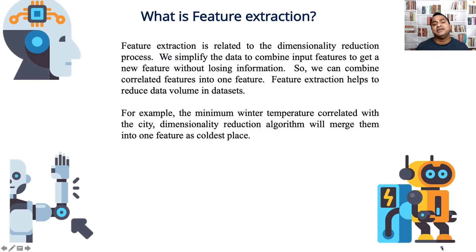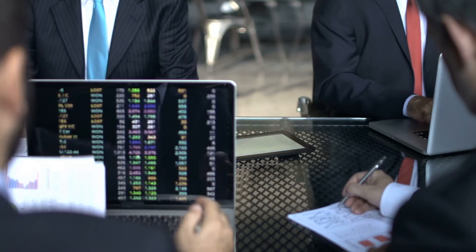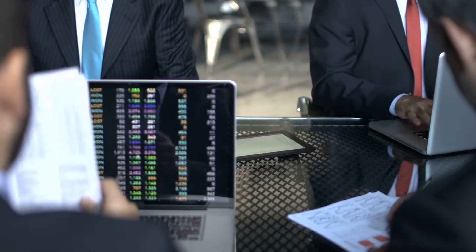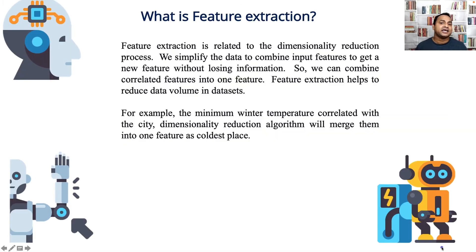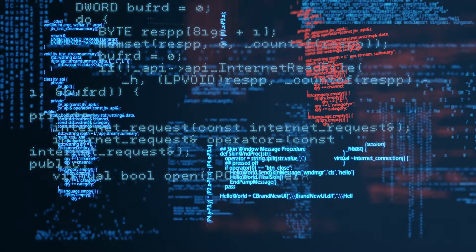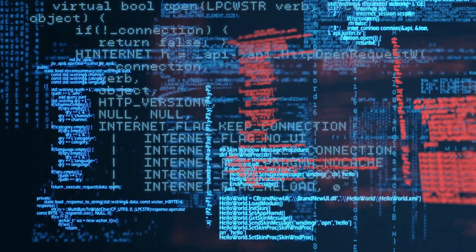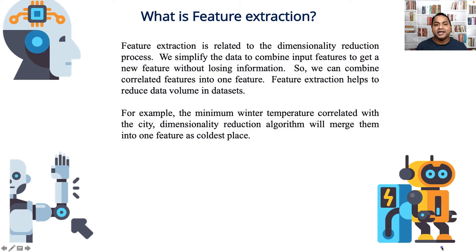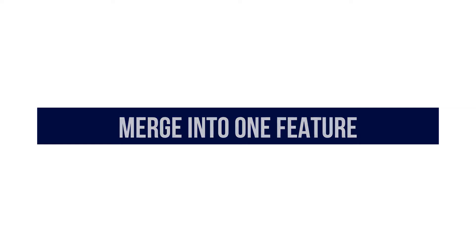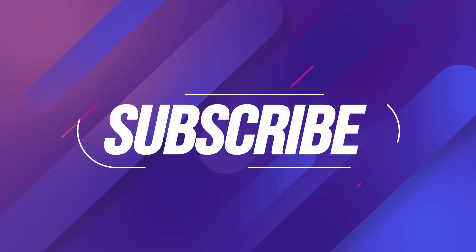What is feature extraction? Feature extraction is related to the dimensionality reduction process. We simplify the data by combining input features to get a new feature without losing information — combining correlated features into one. This helps reduce data volume. For example, minimum temperature in winter is correlated with a city, and a dimensionality reduction algorithm will merge them into one feature called 'coldest place.'